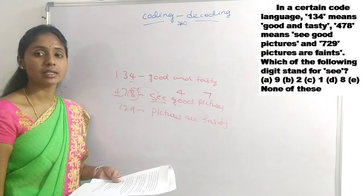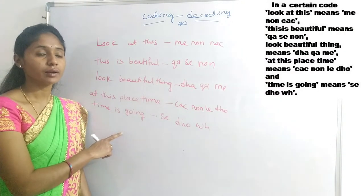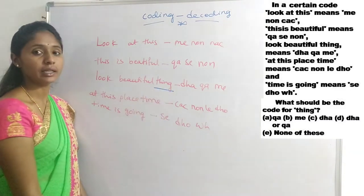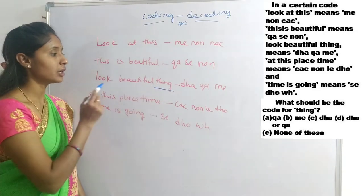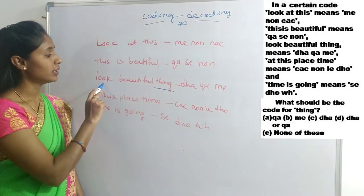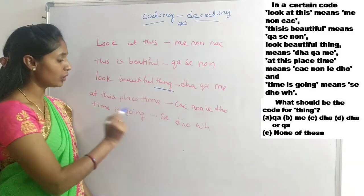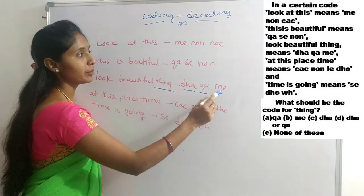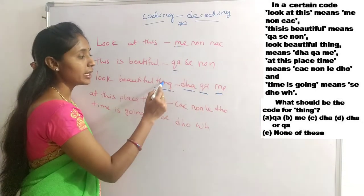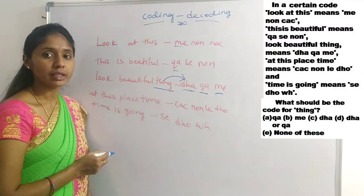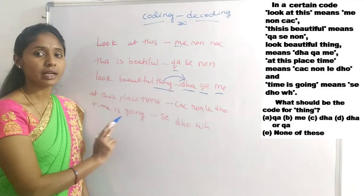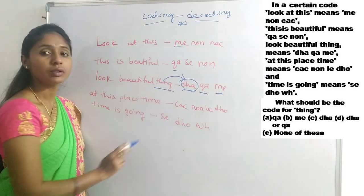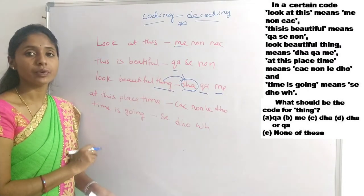The next questions are based on given coded values. First question: what is the code for 'thing'? Thing appears only once in the entire code. DHA, QA, ME, ME — QA is repeated, ME is repeated. The remaining code DHA is not repeated. So thing is coded for DHA — option C is the right answer.